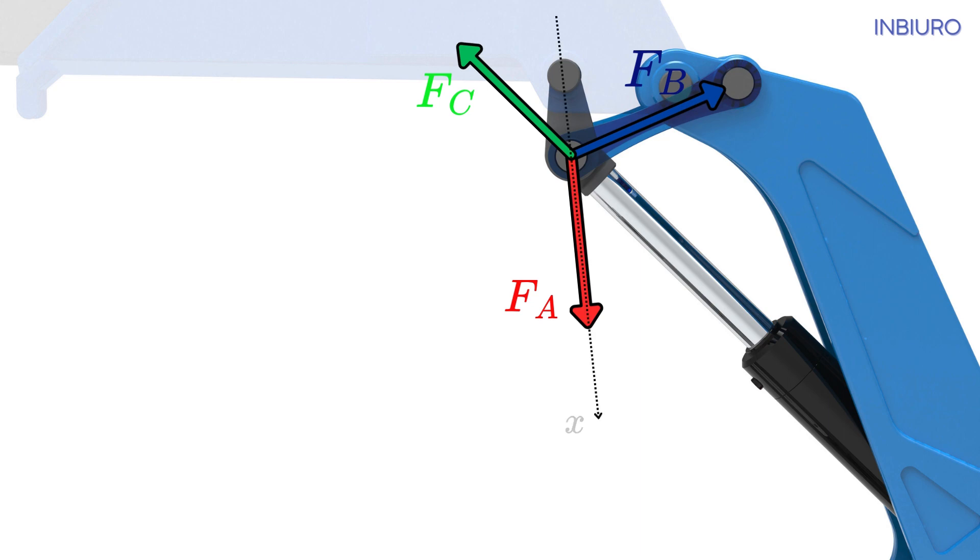Draw local x-axis through pins of the short link and y-axis perpendicular to x-axis. Now, you can write two equations.